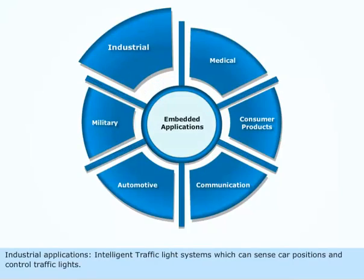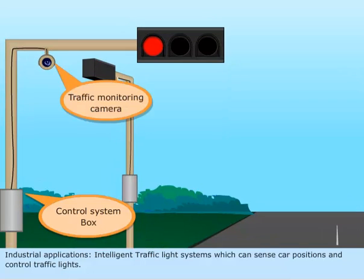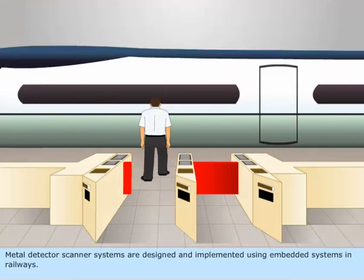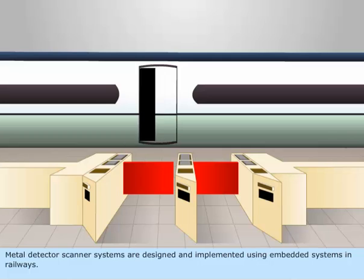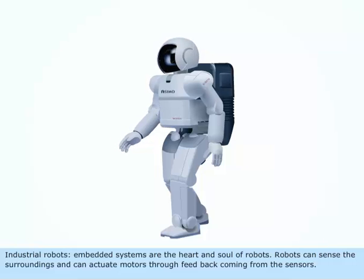Industrial applications: intelligent traffic light systems can sense car positions and control traffic lights. Metal detector scanner systems are designed and implemented using embedded systems in railways. Industrial robots are the heart and soul of embedded systems — robots can sense the surroundings and actuate motors through feedback coming from the sensors.